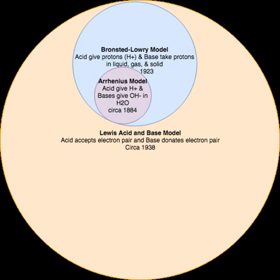The first modern definition of acids and bases in molecular terms was devised by Svante Arrhenius — a hydrogen theory of acids. It followed from his 1884 work with Friedrich Wilhelm Ostwald in establishing the presence of ions in aqueous solution, and led to Arrhenius receiving the Nobel Prize in Chemistry in 1903. As defined by Arrhenius, an Arrhenius acid is a substance that dissociates in water to form hydrogen ions; that is, an acid increases the concentration of H+ ions in an aqueous solution, causing the protonation of water.